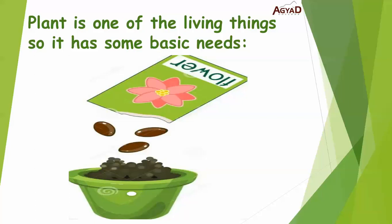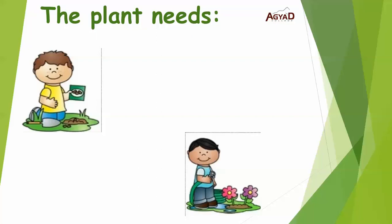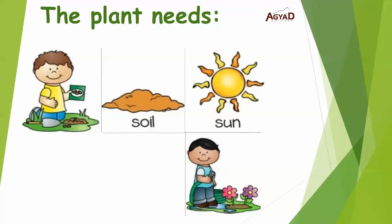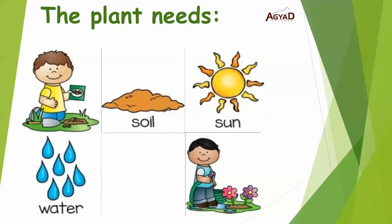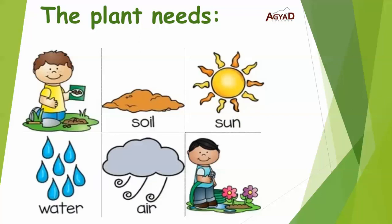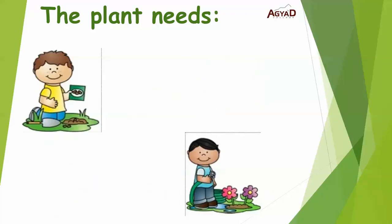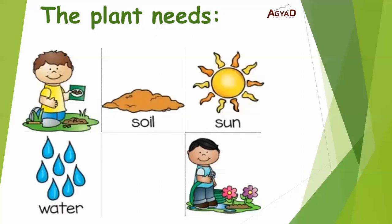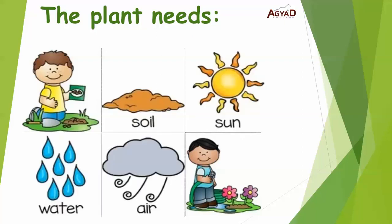Let's learn them together. If you have some seeds and you want to grow a plant, it needs soil, sun, water and air. So the needs of the plant are soil, sun, water and air.